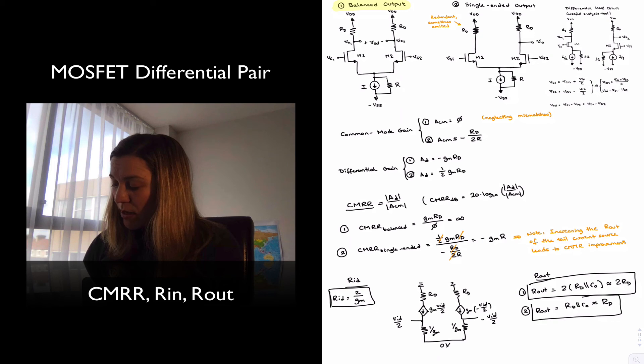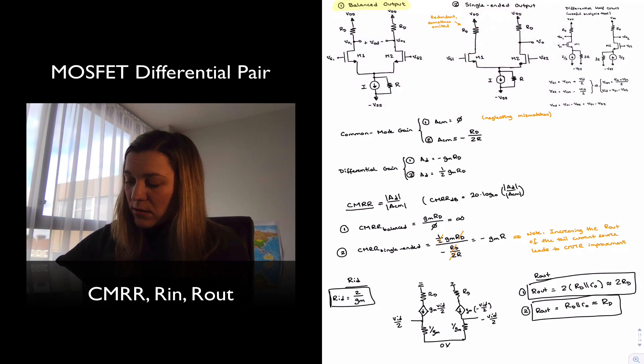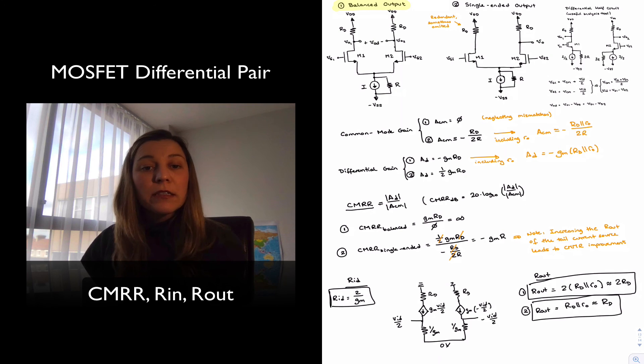Perhaps something else to point out is that we have also neglected little rout when we calculated the gains. But if we wanted to be more precise, we could include little rout in our calculation. And ACM for the differential case will be negative RD in parallel with little rout divided by 2R. So basically, whatever you had an RD, we are just going to put RD in parallel with little rout.